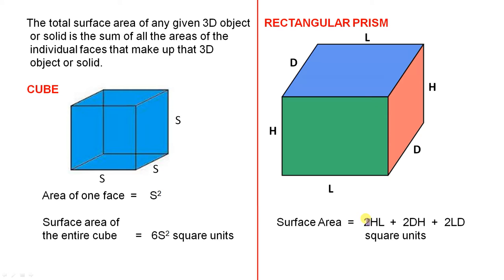The surface area will be 2HL, because this green area is HL, but there's also another one opposite towards the back. Then 2DH, the orange one is DH, but there's also one on the other side, and 2LD, the top is LD, but there's one on the bottom. So if you add those three up, the answer will be in square units.